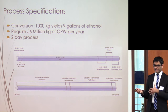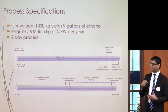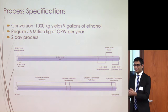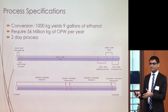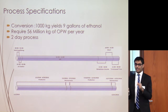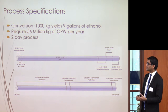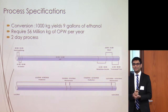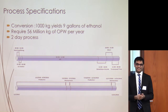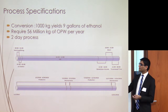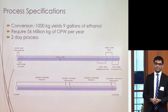Regarding process specifications: our process converts about 1,000 kilograms of orange peel waste to about 9 gallons of ethanol. We will require about 56 million kilograms of orange peel waste per year. That may seem like a lot, but the amount of orange peel waste generated worldwide is about 60 million tons — we're not even putting a dent in worldwide supply. So we're not worried about running out of raw material. This is also a two-day process from beginning to end.